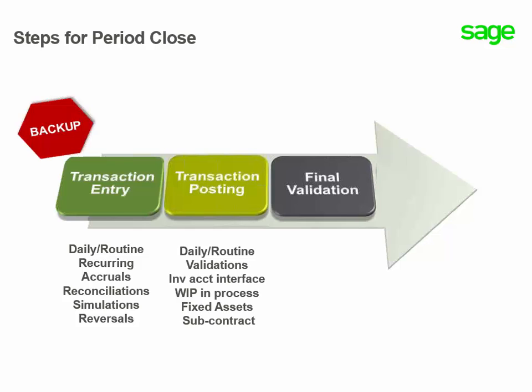You also run your fixed assets depreciations for the period, as well as subcontract cost calculations. Transactions post into the general ledger from submodules in temporary status mode. Those transactions have to be finalized, or in final status, to be able to close the period. So you need to run the final validation task to convert those transactions from temporary to final status. At this point, you are able to close the period.